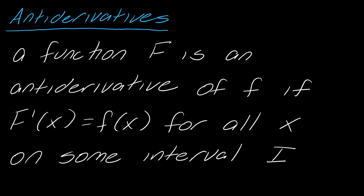So let's start with an antiderivative. A function F is an antiderivative of f if F prime of x equals f of x for all x on some interval I. This is kind of what it sounds like — if you have a derivative, it's the idea of going backwards on that derivative and figuring out what the original function had to be. The general term here is antiderivative, and it's going to get used over and over.